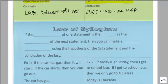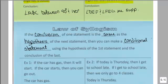The law of syllogism says if the conclusion of one statement is the same as the hypothesis of the next statement, then you can make a conditional statement using the hypothesis of the first statement and the conclusion of the last.